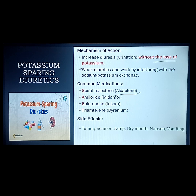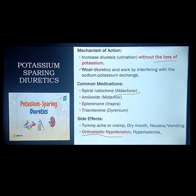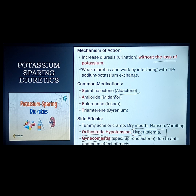Side effects of potassium-sparing diuretics include stomach cramps, dry mouth, nausea and vomiting related to promoting hyperkalemia. Orthostatic hypotension occurs due to loss of fluids decreasing blood volume and blood pressure. Hyperkalemia — watch out for this as a side effect because potassium is retained and not excreted. Gynecomastia is common especially in patients taking spironolactone, because it has an anti-androgen effect — lowering androgen causes males to develop female characteristics such as breast enlargement.